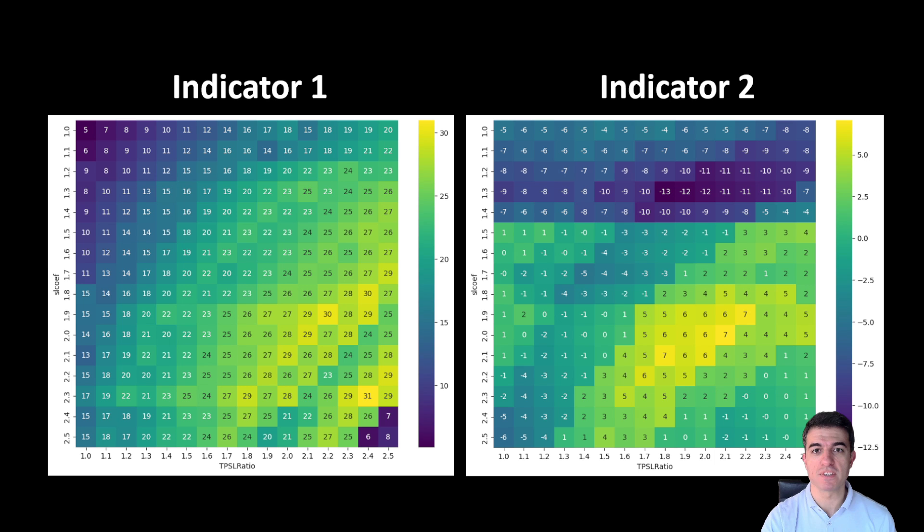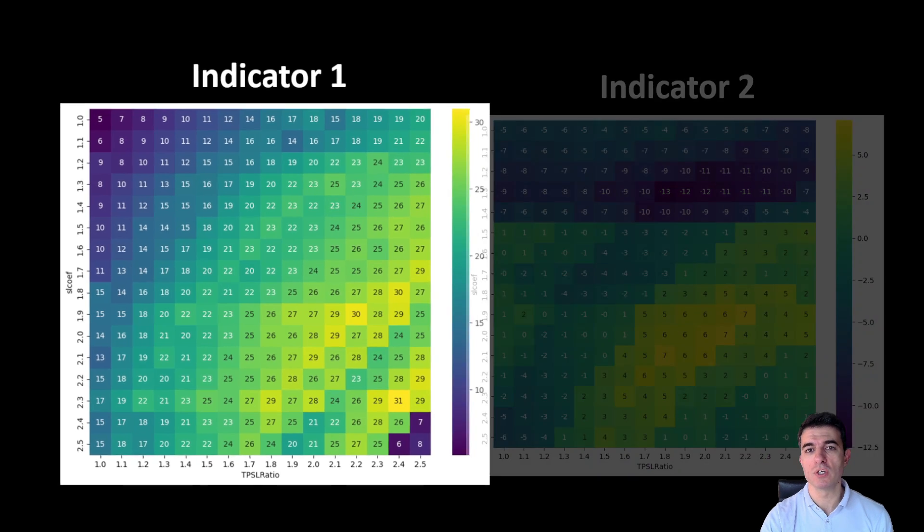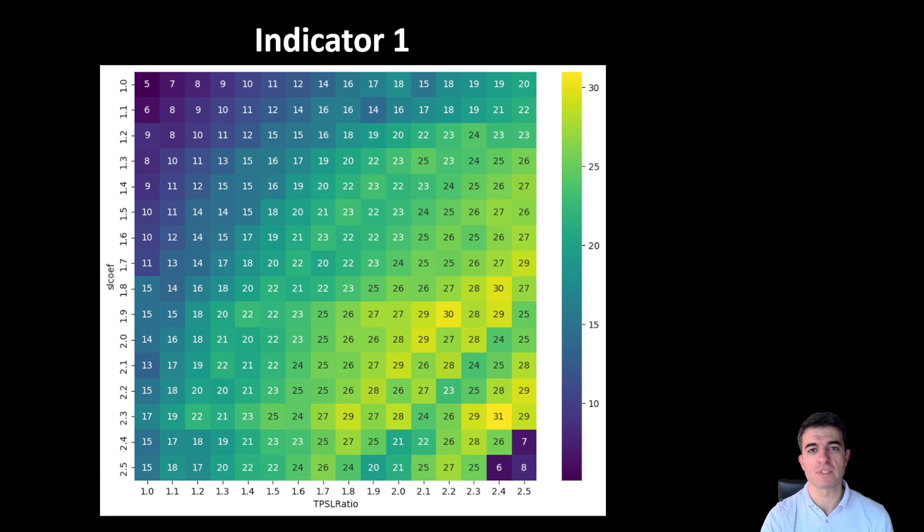It's also somehow related to the previous video around accounting for commissions in backtesting. When we look at a heatmap that shows different setups of stop-loss distances and take-profit stop-loss ratios, we can immediately see that the indicator we are using has a potential.